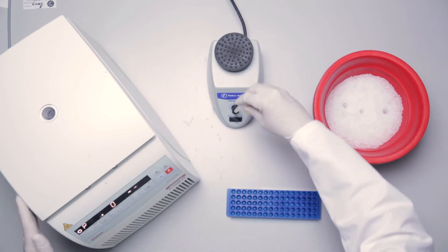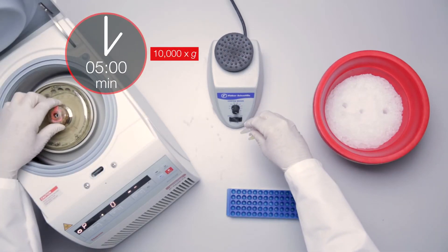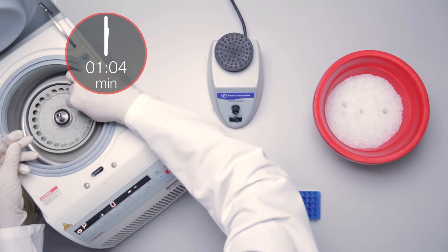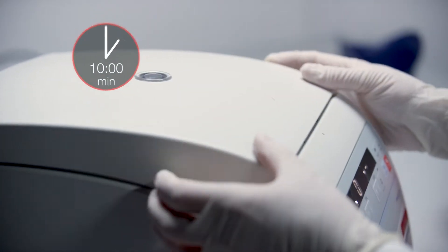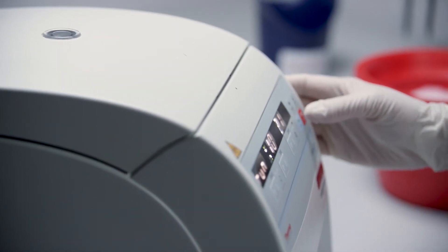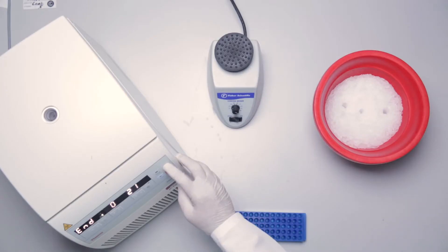Centrifuge at 10,000 g for 5 minutes to remove particulates, or for 10 minutes if samples are high in lipid content. Transfer the contents to a new tube. Avoid multiple freeze-thaw cycles.